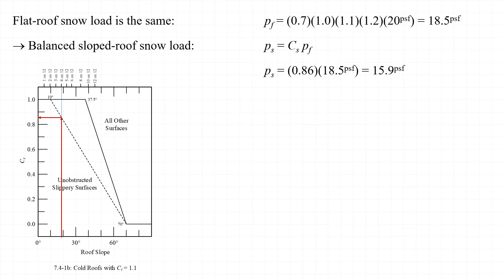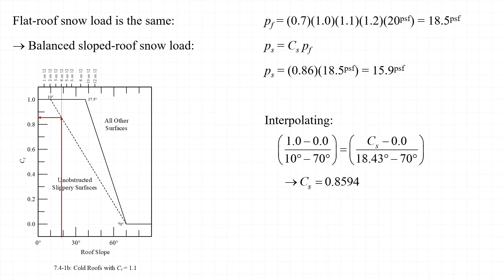As a closing thought, instead of graphically using figure 7.4-1, we could use interpolation to find the roof slope factor with more precision. Using this approach, C sub s equals 0.8594. Note that equations are available in the commentary to Chapter 7 of ASCE 7 corresponding to figures 7.4-1. However, these equations and interpolation provide more precision than the model warrants — any more than two significant digits is probably not justified.